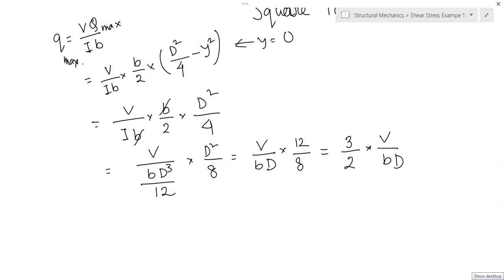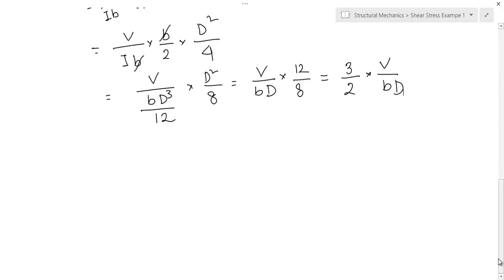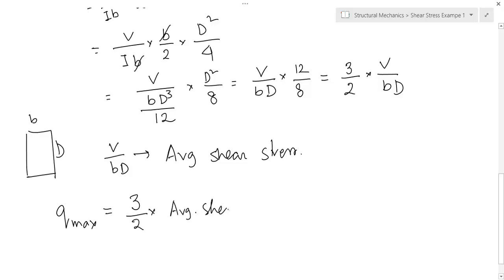You see, the rectangular area is b d. So, V by b d is nothing but the average shear stress. So, Q max which is the maximum shear stress is 3 by 2 into average shear stress.